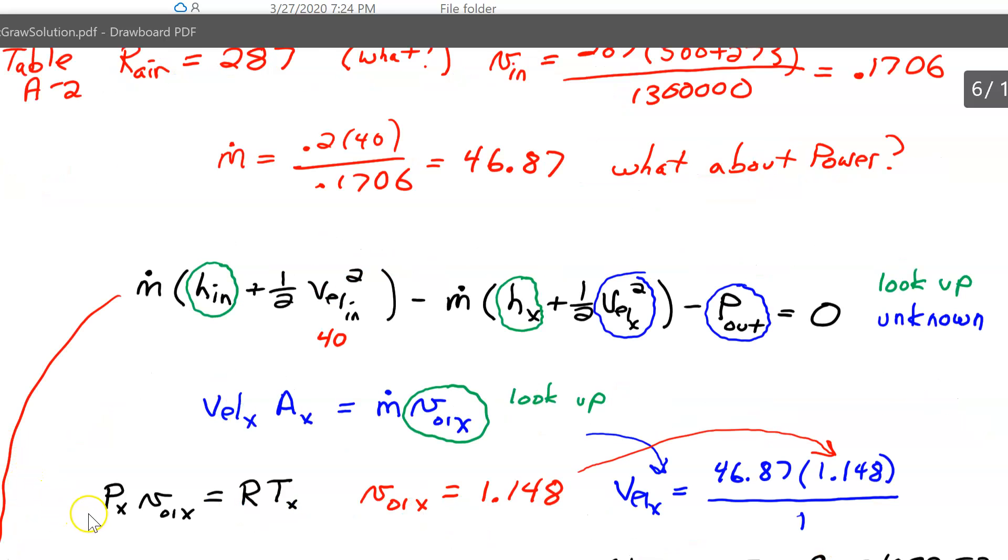Okay, again, because it's an ideal gas, I'm going to use the ideal gas equation. So the pressure at the exit times the little volume at the exit equals the gas constant times the temperature. Again, make sure your temperature's in absolute. So you can use the black equation and solve for the little v. You take the little v, put it into the blue equation, and you can solve for the velocity that's at the end. So you've got the velocity coming out.